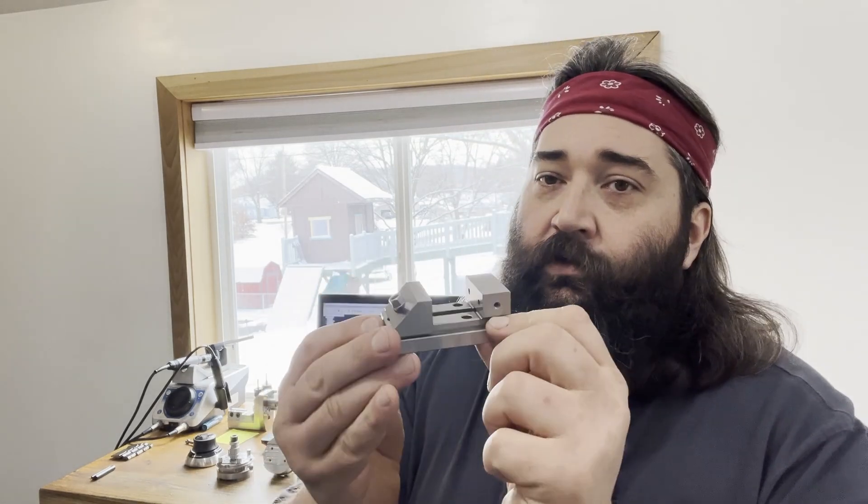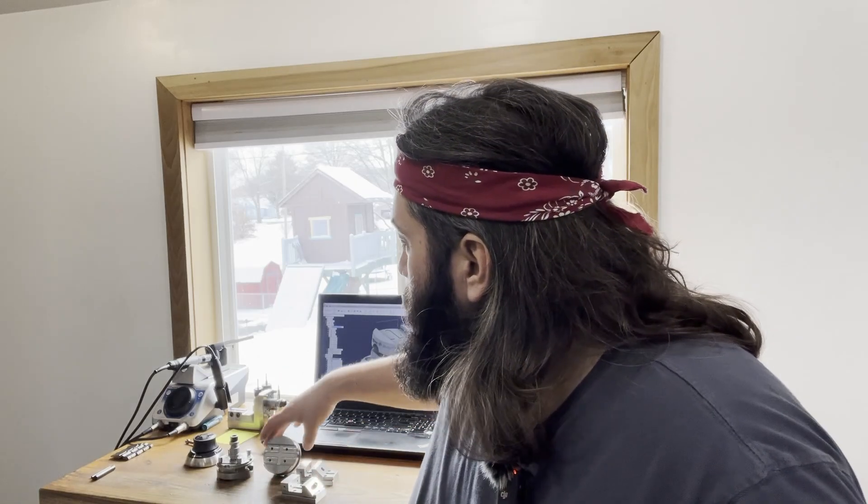First tooling project is we have two of these beautiful little Hermann Schmitt vices that we need to palletize so they can jump from various machine to machine with the work they're holding.